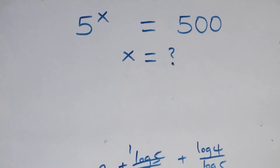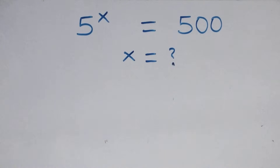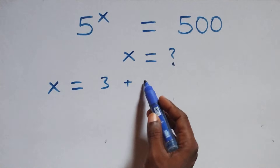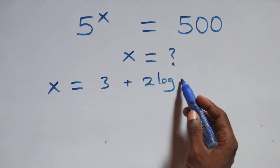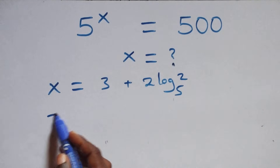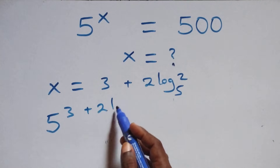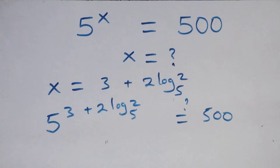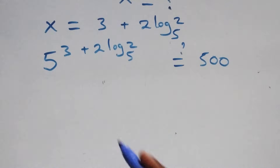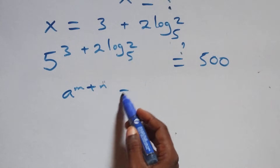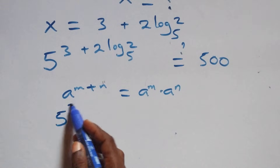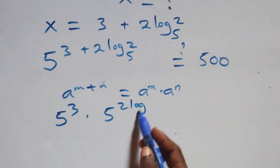Let's check if this satisfies the problem. We substitute x equals to 3 plus 2 log 2 base 5. What we have becomes 5 raised to the power of 3 plus 2 log 2 base 5, which should equal 500. Using exponent rules, this is 5 raised to power 3 times 5 raised to power 2 log 2 base 5.